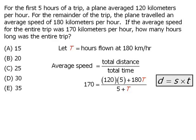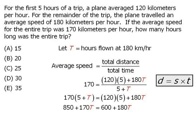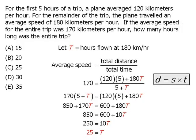Let's begin by multiplying both sides of this equation by 5 plus T. Now we'll simplify both sides. Next, we'll subtract 170T from both sides, then subtract 600 from both sides. Finally, we'll divide both sides by 10 to get T equals 25.